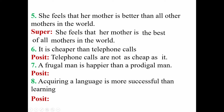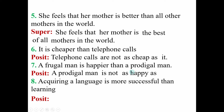'A frugal man is happier than a miser.' This is comparative degree — change into positive. Same rule: write the next part after 'than' as subject: 'a frugal man.' Since the sentence is affirmative, make it negative: 'is not.' Then: as the positive form of 'happier' is 'happy,' write 'as happy as,' then the given subject.